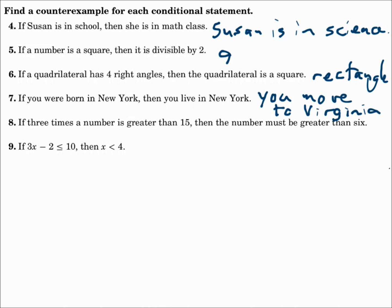Number eight: if three times a number is greater than fifteen, then the number must be greater than six. I need a number where three times that number is greater than fifteen, but the number is not greater than six. How about six? Three times six is 18, which is greater than fifteen. Is six greater than six? No. So that's your counterexample — it's true for the hypothesis, but false for the conclusion.